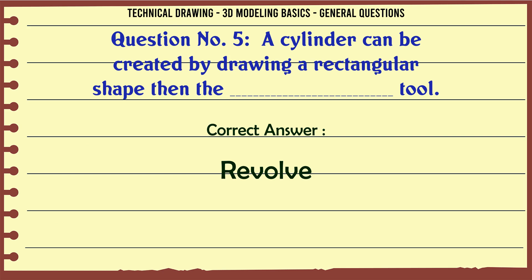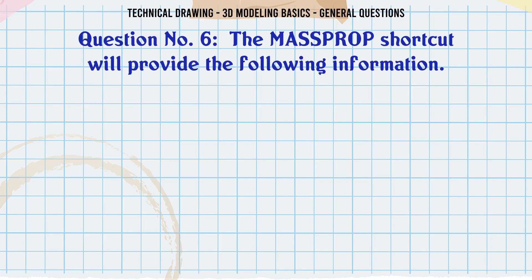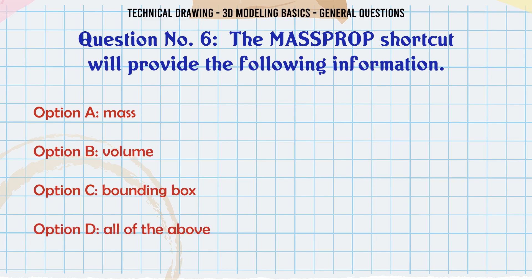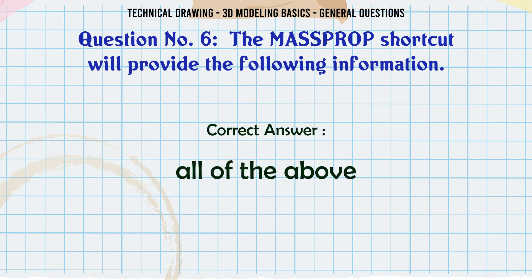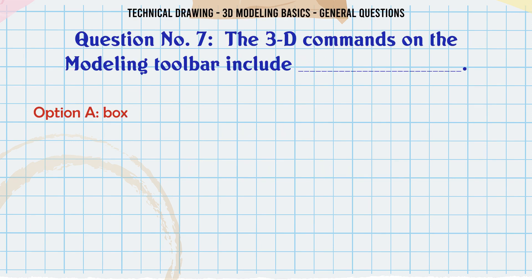Revolve. The MASSPROP shortcut will provide the following information. A. Mass. B. Volume. C. Bounding box. D. All of the above. The correct answer is all of the above.